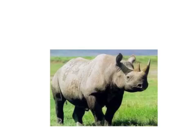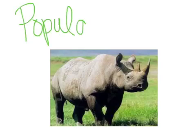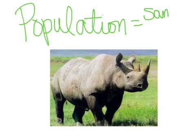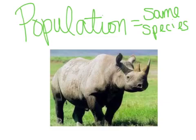Beyond just an individual organism, you could look at a population. Hopefully you remember from our discussion of evolution — a population is a group of organisms that can successfully breed together. Everybody in one population belongs to the same species. So we could look at a population; this picture just shows a single rhinoceros, but we could look at a population of rhinos.